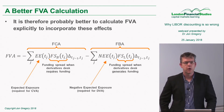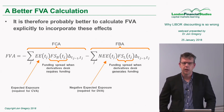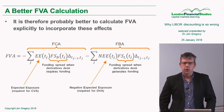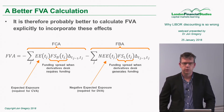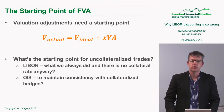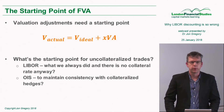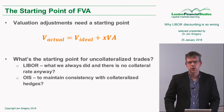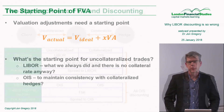Here's a representation of what we call FVA. It's generally divided into two terms: one is often known as a funding cost adjustment — the first term — and the second is a funding valuation adjustment. We obviously need a starting point, and this is probably the easiest way to represent a valuation adjustment.